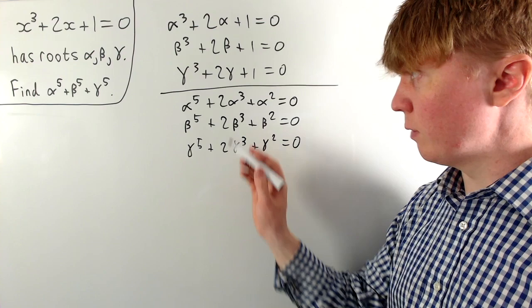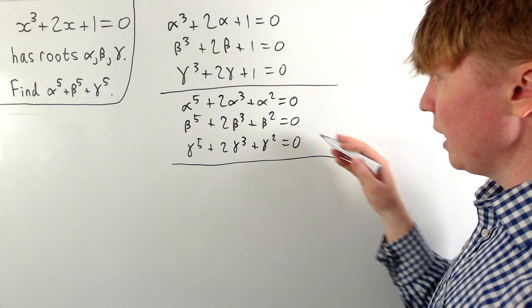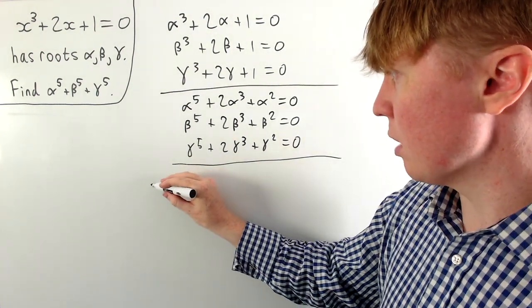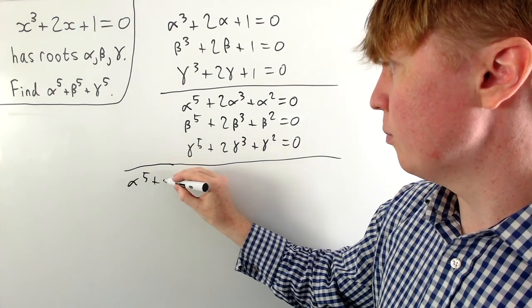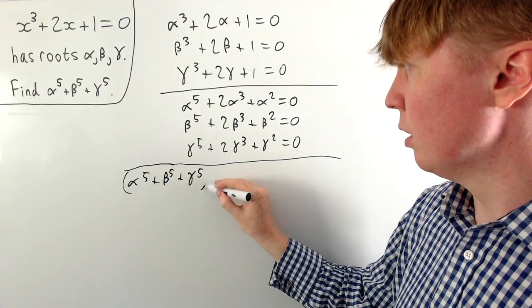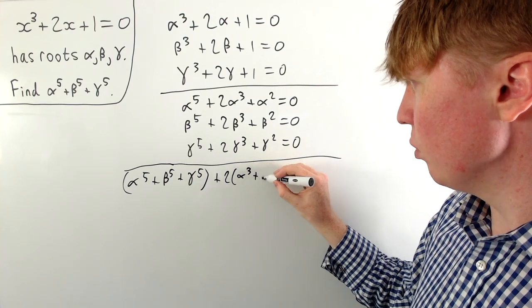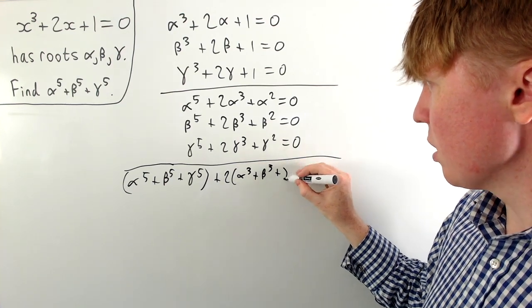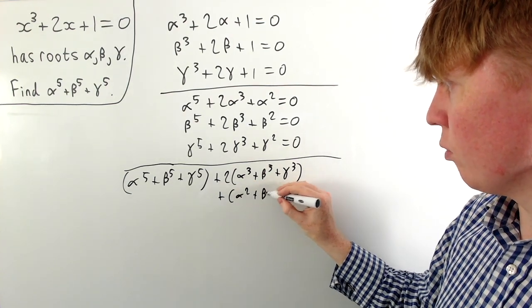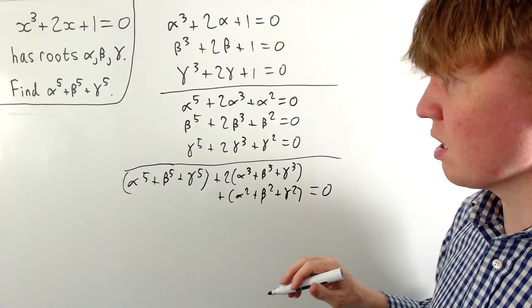Now we add together all of the left-hand sides of each equation — the result still equals zero since each right-hand side is zero. Grouping terms, we get: alpha to the five plus beta to the five plus gamma to the five, plus two times alpha cubed plus beta cubed plus gamma cubed, plus alpha squared plus beta squared plus gamma squared, all equal to zero.